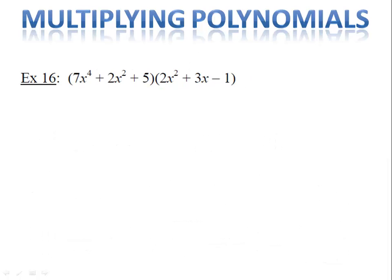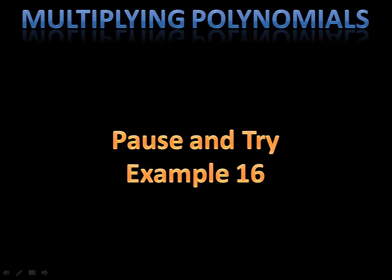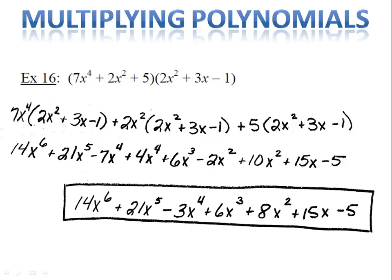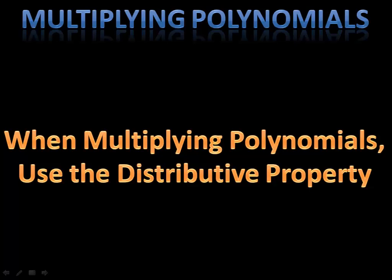Example 16 is the last one for you to try today. Please pause the video and try example 16. In the solution, we distributed the 7x to the fourth, the 2x squared, and the 5. Using the distributive property and combining like terms, we end up with 14x to the sixth plus 21x to the fifth minus 3x to the fourth plus 6x to the third plus 8x squared plus 15x minus 5. That's a mouthful! When it comes down to it, it's always the distributive property — that's everything you need to know about multiplying polynomials.